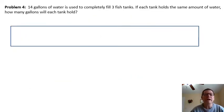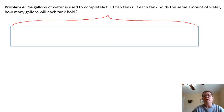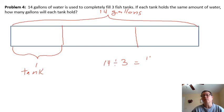Problem four. If 14 gallons of water is used to completely fill three fish tanks, if each tank holds the same amount of water, how many gallons will each tank hold? Once again, we're going with the total. The total is 14 gallons. How many pieces are we going to split the tape diagram into? You're right, three for three fish tanks. Each one of these is going to be one tank. We can see this is 14 divided by three tanks, which equals fourteen-thirds gallons. So each one will have fourteen-thirds gallons.